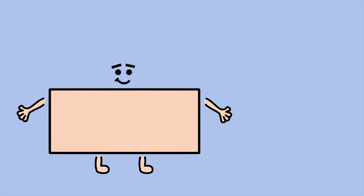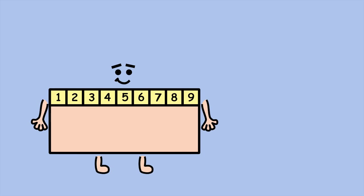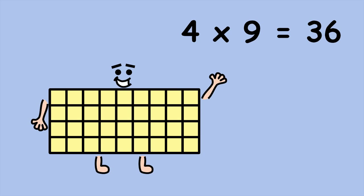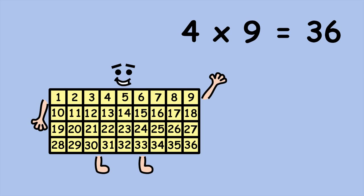If you know your times tables, there's an even quicker way of working out my area. We know each row has nine squares. Now, how many rows are there? Four. Four groups of nine, or four times nine equals 36.